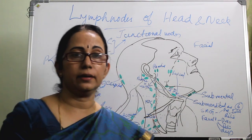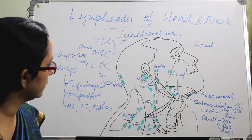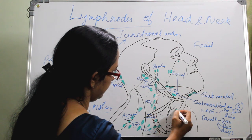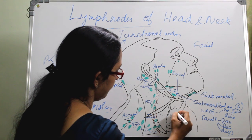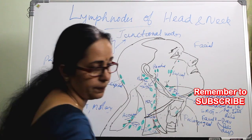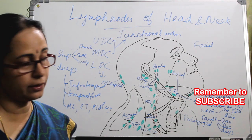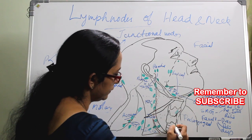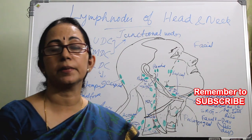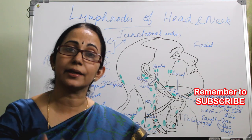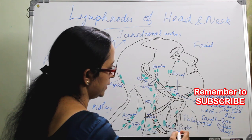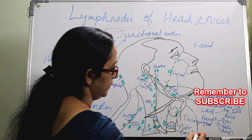In the anterior neck area, there are pre-laryngeal nodes, otherwise called the Delphian nodes, and also para-laryngeal nodes. The para-laryngeal nodes lie mainly along the recurrent laryngeal nerve.